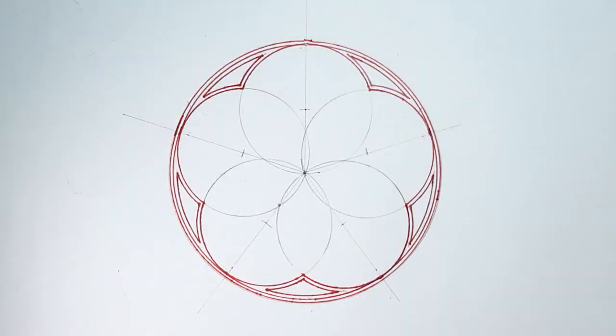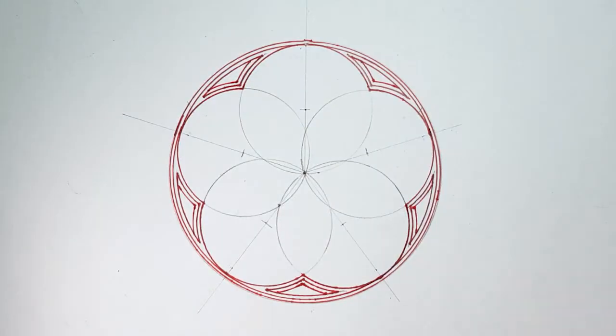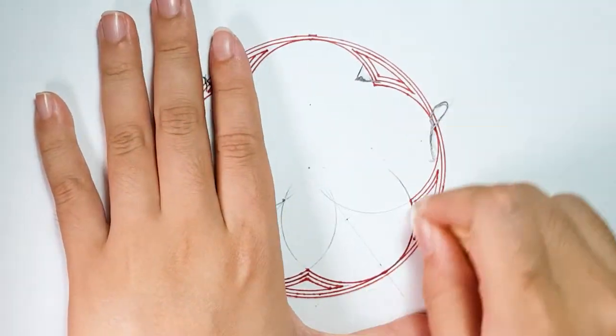The basic shape of cinquefoil is finally constructed. Add the shading line details then erase the guideline at the last.